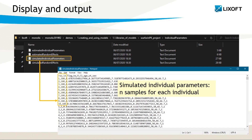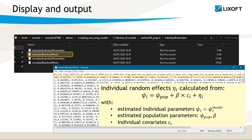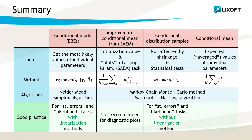The file named simulated individual parameters lists all samples from the conditional distribution that are used for plots and statistical tests. Finally, the files named estimated random effects contain values of random effects that are calculated when we know the individual and population parameters. The approximated conditional mean serves only for the initialization or to generate plots when the EBEs and conditional distribution tasks were not performed. In general, it is not recommended except for a quick diagnosis.